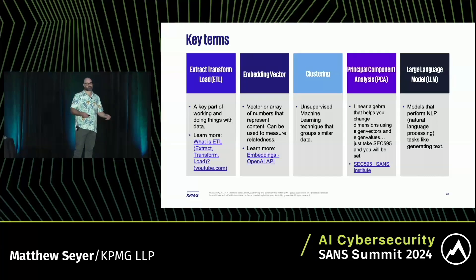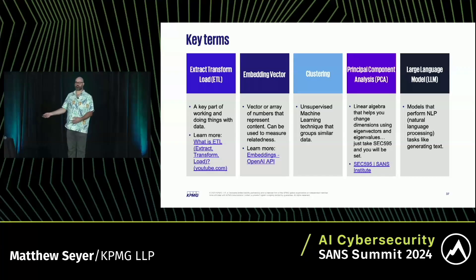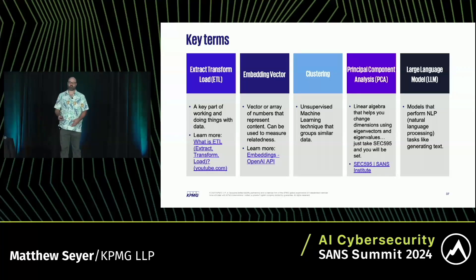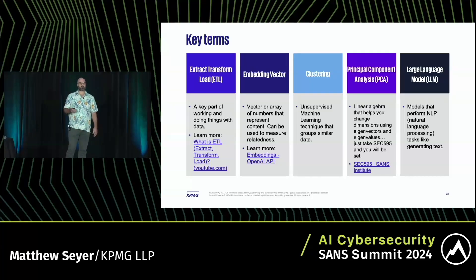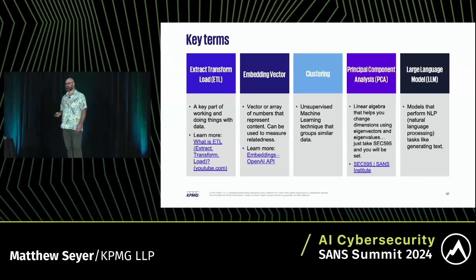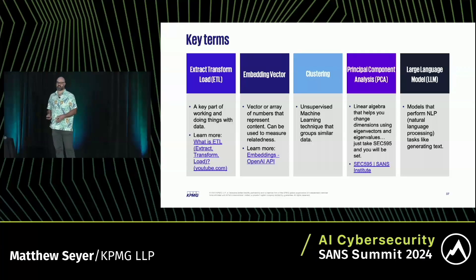If you're doing forensics and DFIR, pretty much everything you do is ETL — you extract data from a source, transform that data to give it context and make it meaningful, and load it somewhere else, whether it's a spreadsheet or another back-end system. The core concept behind embedding vectors: you've heard about RAG — this is the core concept behind it, where you have an array of numbers that represent text. Clustering is putting data together in buckets based on similarity, and we're going to use those vectors to do that.